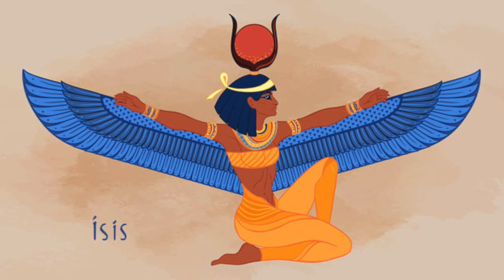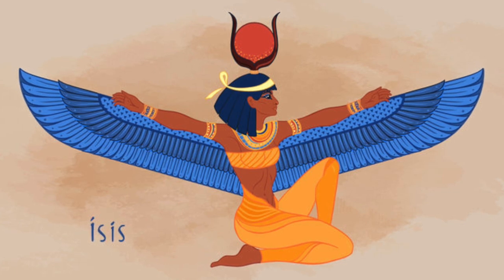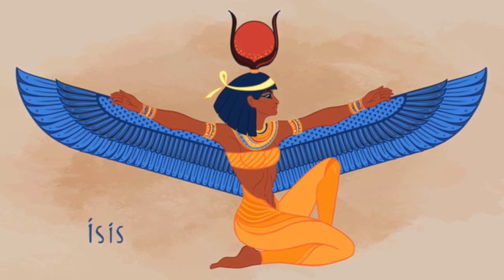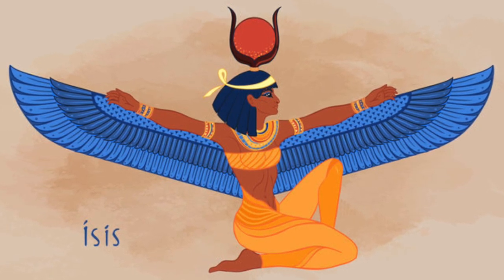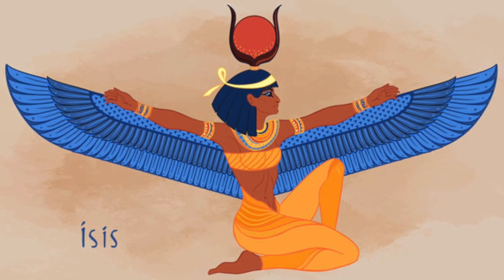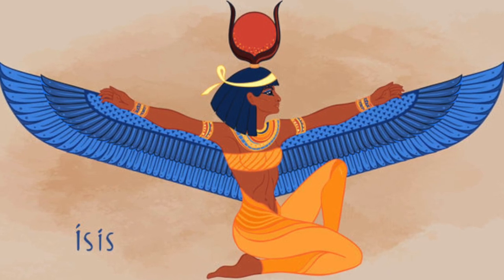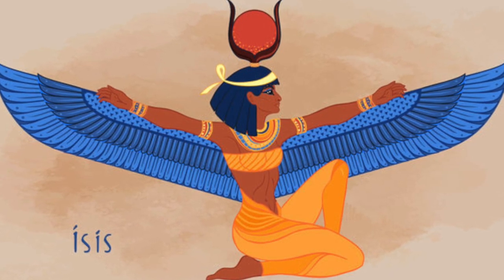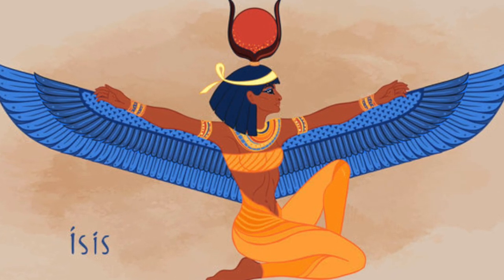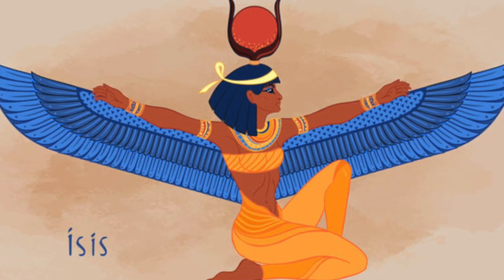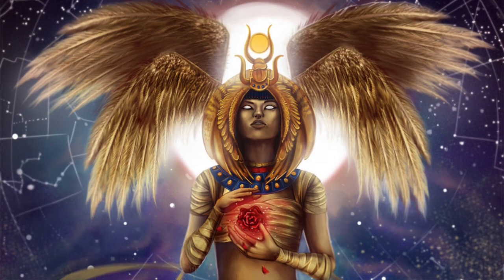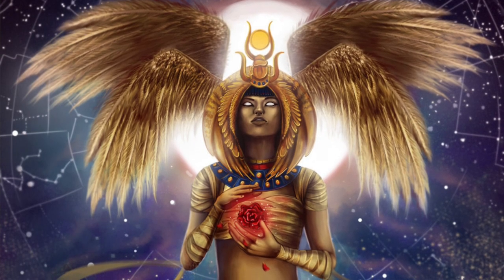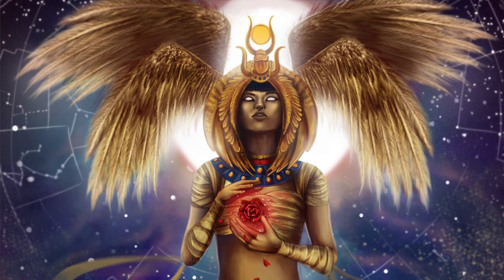The symbols used for her were the throne headdress, the moon disc with cow's horns, the sycamore tree, the kite hawk, outspread wings, and the throne. Isis was usually represented as a woman wearing a long sheath dress and an empty throne as her headdress. The empty headdress represented the death of her husband and her role as the seat of the power of the pharaoh.